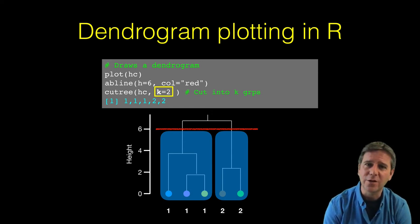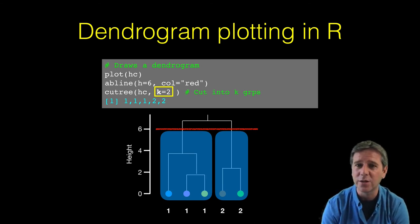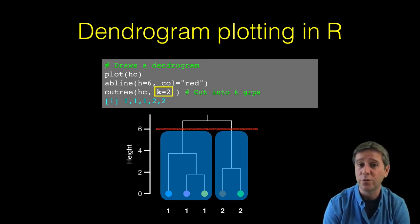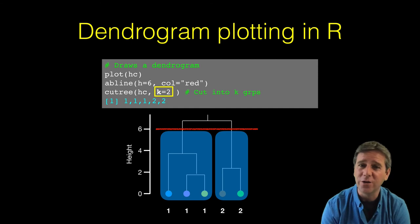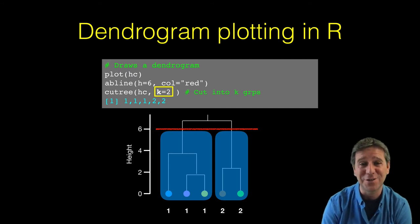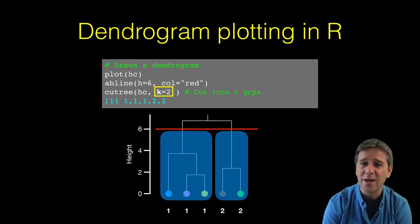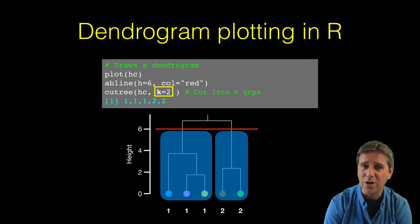Figuring out a good height to cut at can often be tricky, especially with larger datasets and more complicated trees. You can optionally tell cuttree to cut at a given k number of groups. This will cut the tree appropriately to yield that many clusters. For example, saying k equals 2 will return exactly the same result as cutting at height equals 6. Once we've viewed the dendrogram, this is often an easier way to cut it.